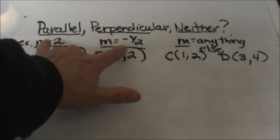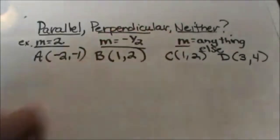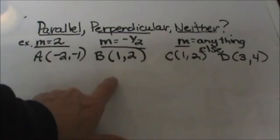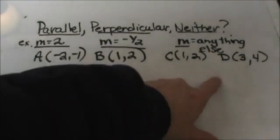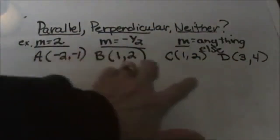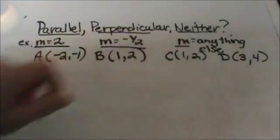And then if we get any other answer besides those, it would be neither. So now let's do our own pairs. We're going to take AB, find the slope of that line, and then CD, find the slope of that line, and compare and see if these are the same, perpendicular, or neither.